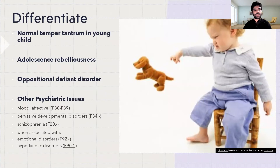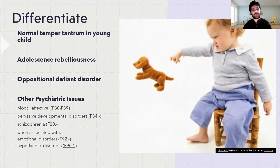Before diagnosing Conduct Disorder, it is very important to rule out normal temper tantrums, adolescent rebelliousness, Oppositional Defiant Disorder, other psychiatric issues like mood disorder, pervasive developmental disorder, schizophrenia, and ADHD.